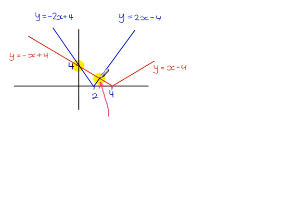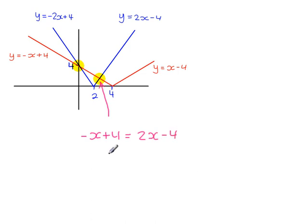So we have to work out the x-coordinate for the second intersection point. We take the equation y equals minus x plus 4 and solve it simultaneously with y equals 2x minus 4. Adding x to both sides, then adding 4 to both sides, the x-coordinate here is 8 over 3.